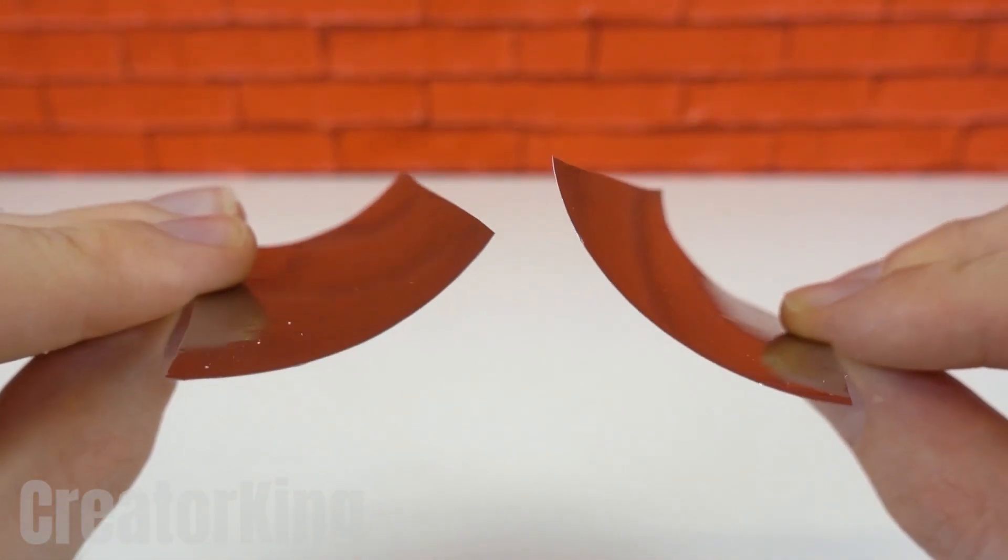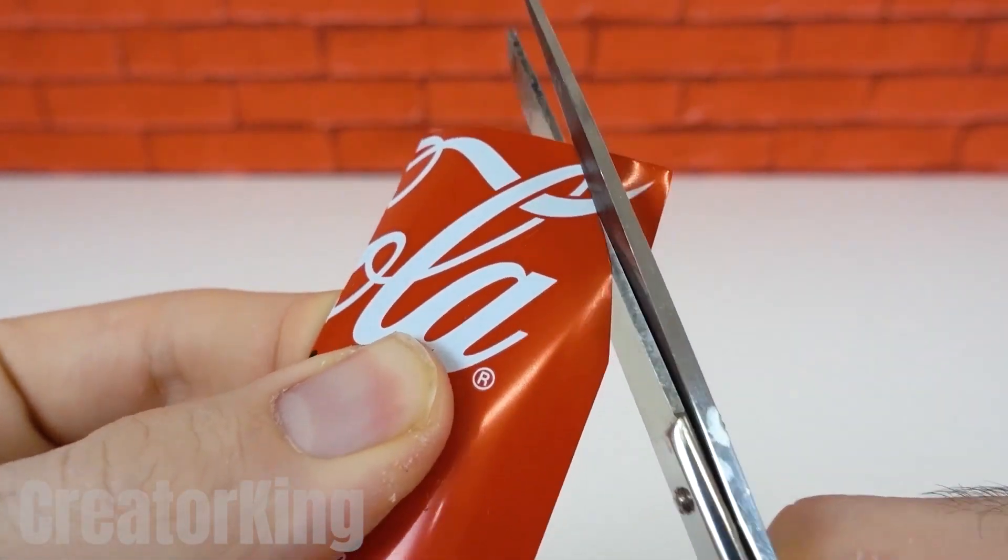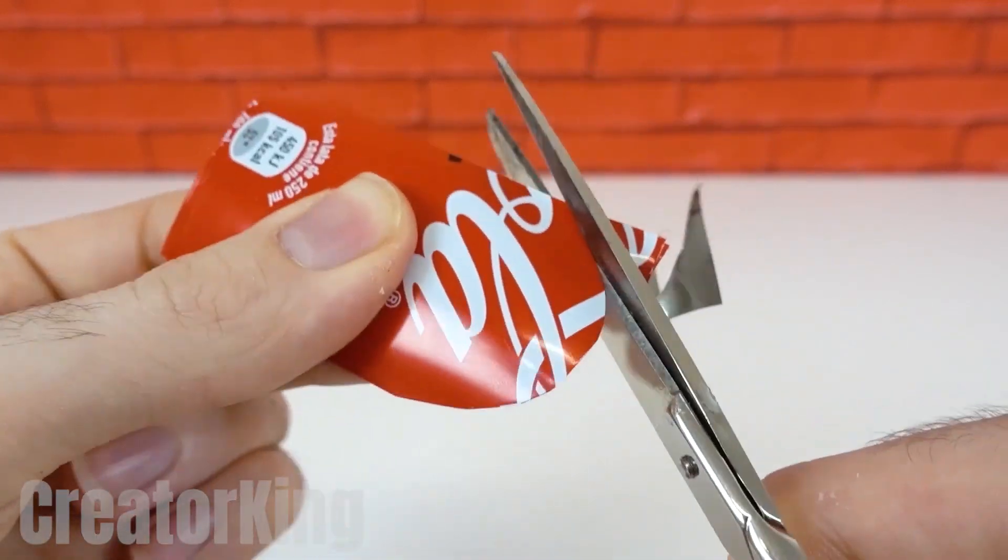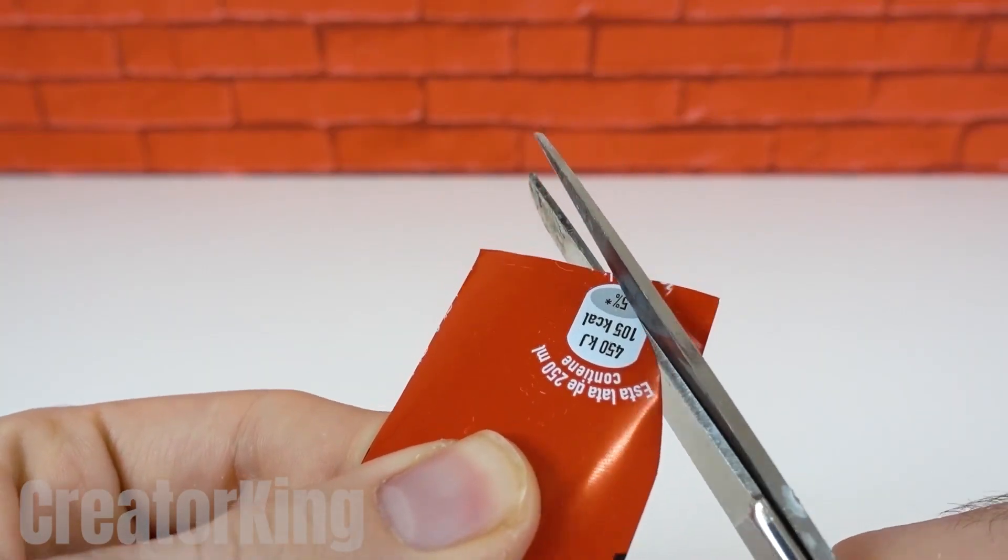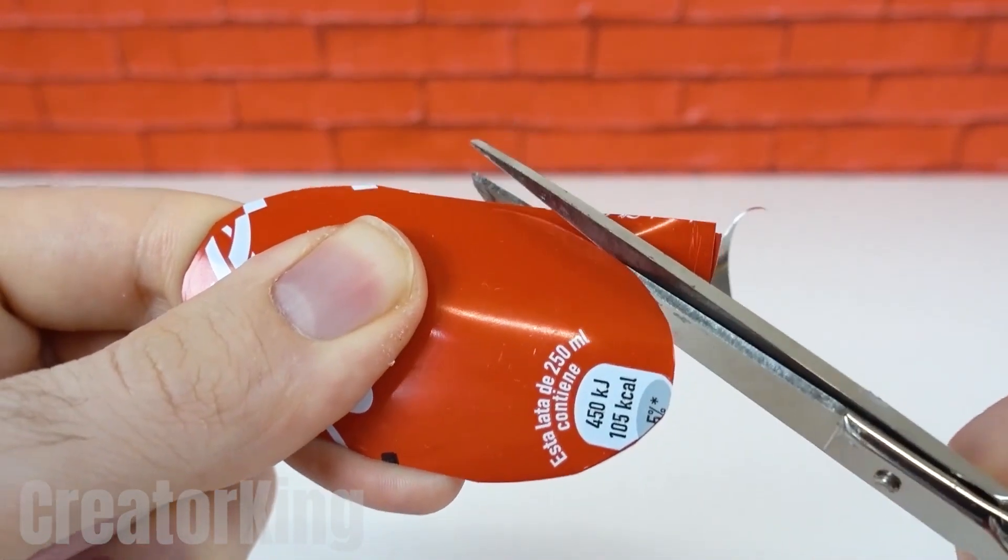Once we have both pieces of 4 x 7 cm, round the ends with scissors to get a pair of elongated ovals. These will be indestructible propellers for our light aircraft.